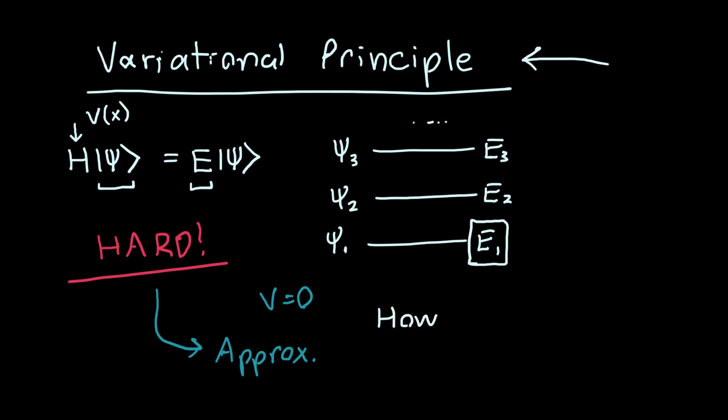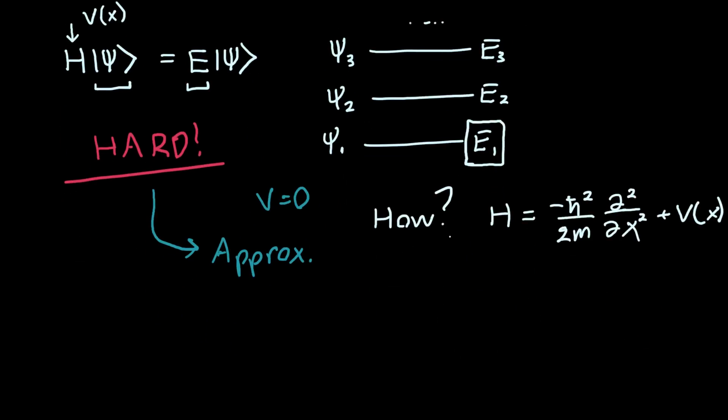And you might ask, how do we do that? How do we find E1 for a given arbitrary H? Because H is complicated—in one dimension it's minus ℏ²/2m d²/dx² plus our potential energy. It's gross, it's very difficult to solve. So how can we make an approximation to give us E1? And what we do is we give up.